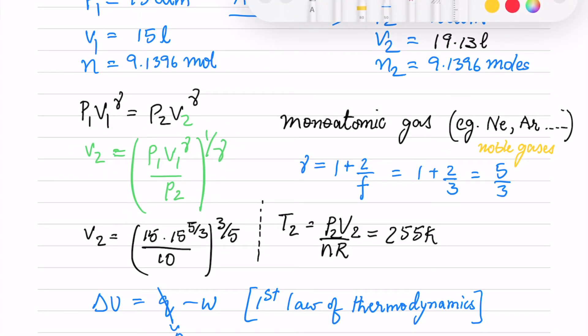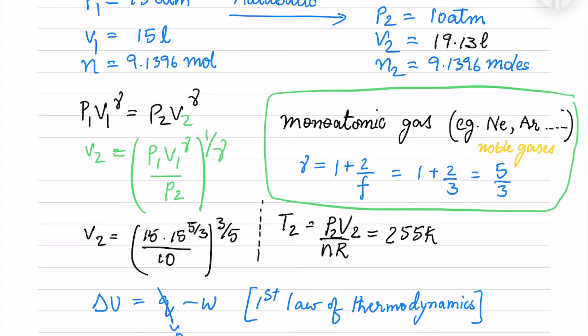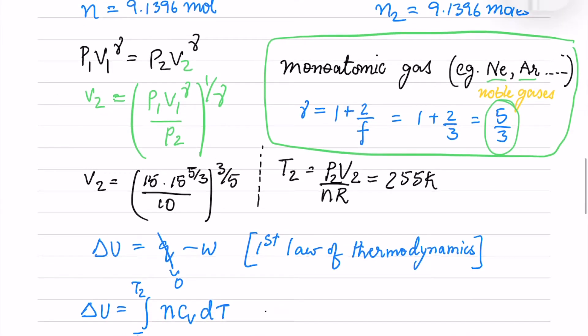For a monoatomic gas, gamma equals 1 plus 2/F. Monoatomic means single atoms like neon or argon, noble gases. Gamma equals 1 plus 2/3, where 3 represents three linear motions in xyz directions. We get gamma = 5/3. Using this, I get the final volume V2 = 19.13 liters and temperature T2 = P2V2/nR = 255 Kelvin.